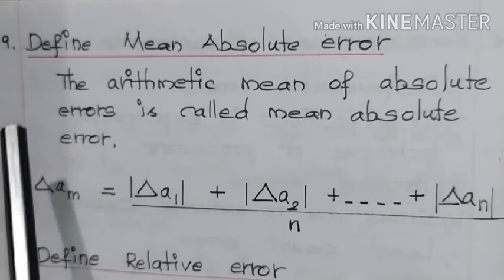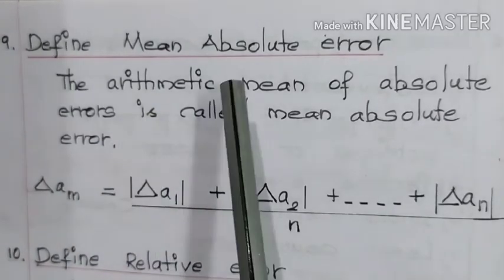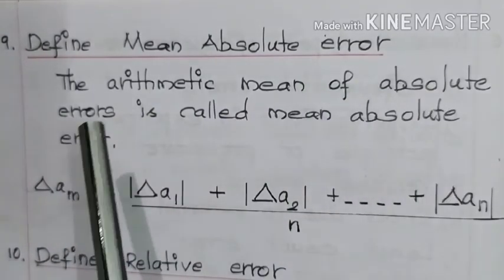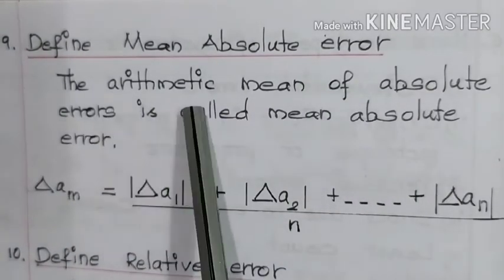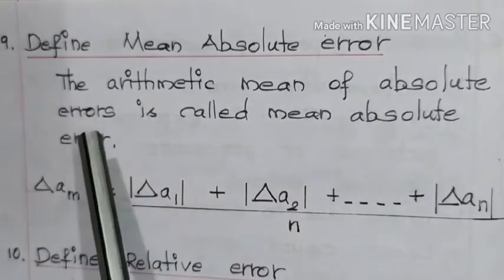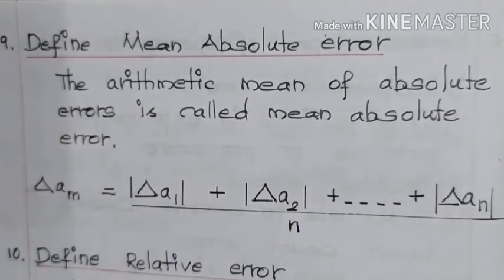The ninth question: Define mean absolute error. The arithmetic mean of absolute errors is called mean absolute error.